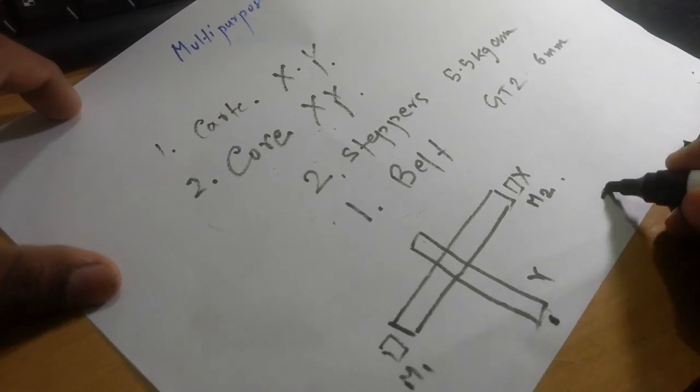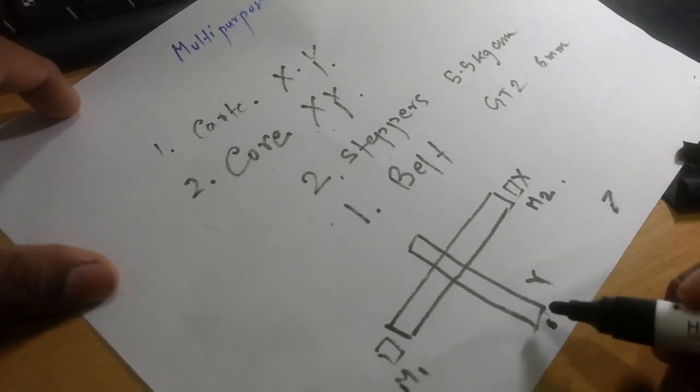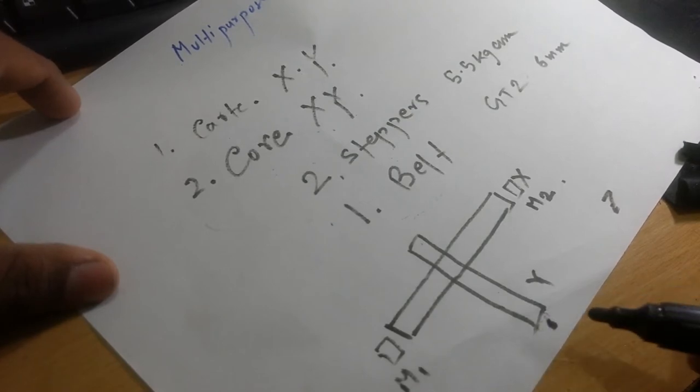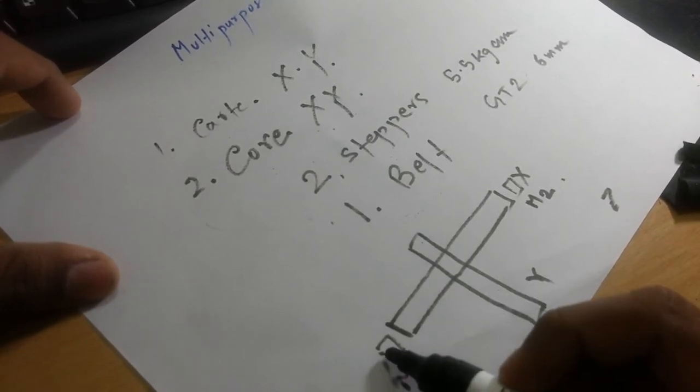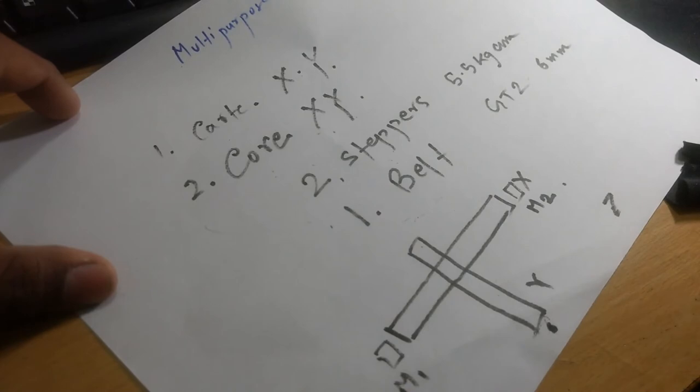I am not using any Z axis here, but I will be using a small servo to just lift the tool up and down. Even the belt, I will show you how the belt will be connected.